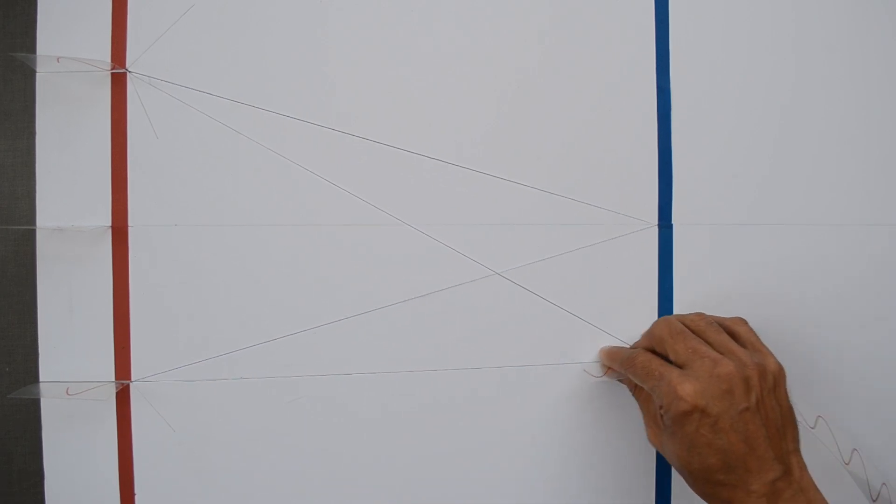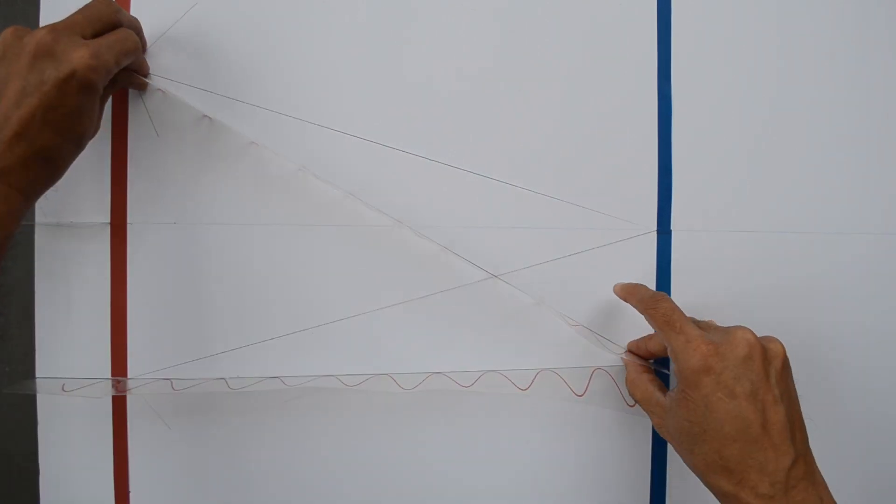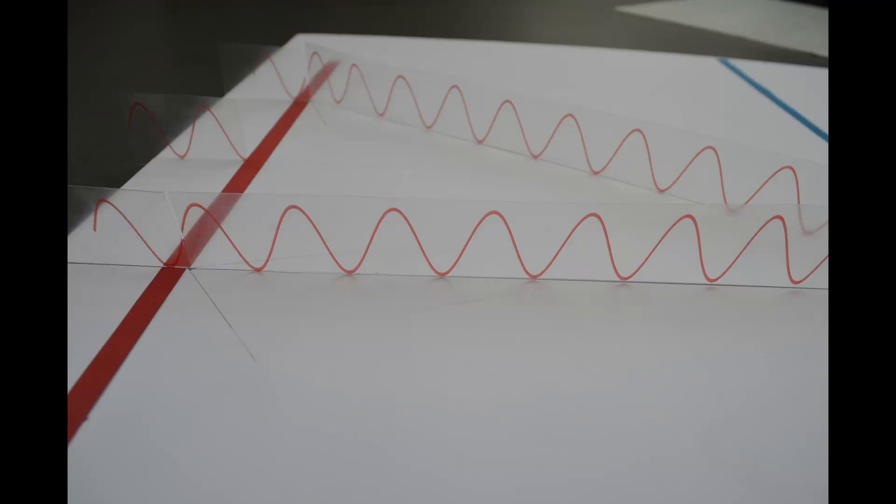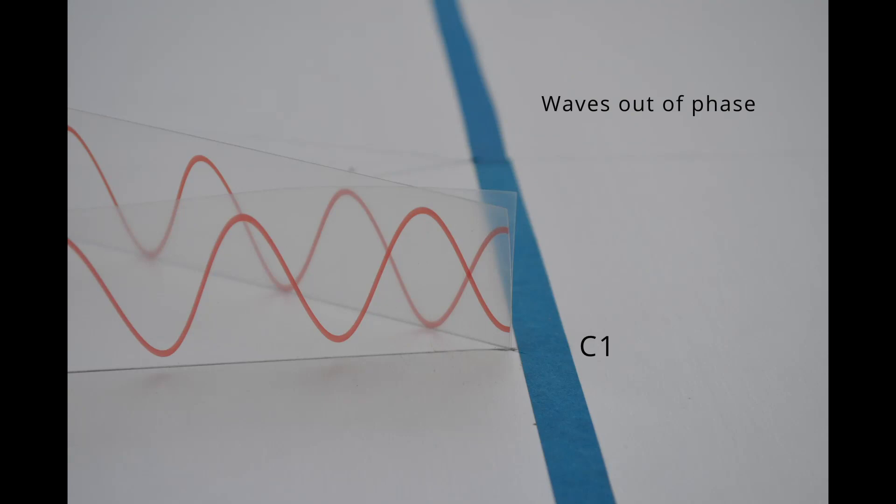How about this location C1 slightly away from C? For these waves reaching at point C1, they are still in phase when waves start from point sources S1 and S2. But they are out of phase at C1.